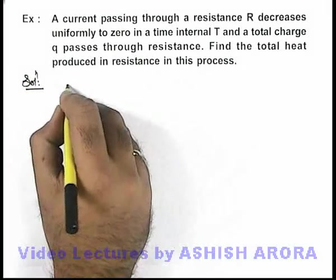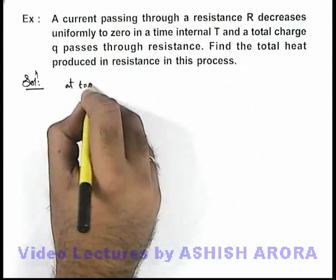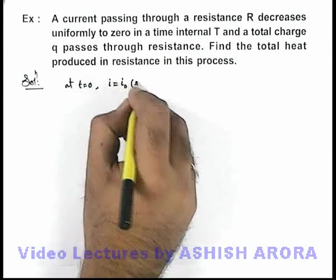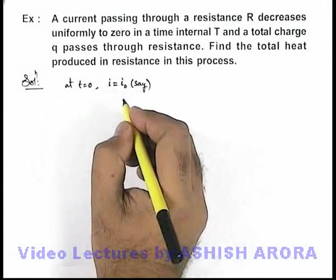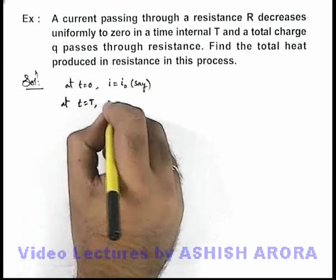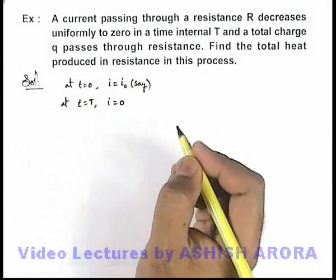Now in this situation, we are given that at t equal to zero there was some current—let us consider the current was equal to i_0. We'll calculate the value of i_0 later. And at time t equal to T, the current drops down to zero, as it is given to us.